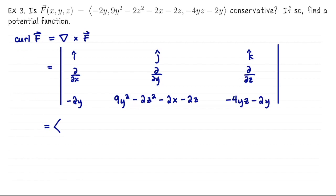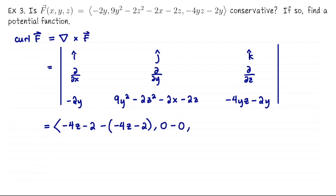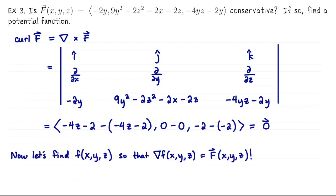Now we do this curl cross product. d/dy of (−4yz − 2y) is going to be −4z − 2, and then we subtract off d/dz of that large second entry, which is also −4z − 2 — so they cancel out, good news. For the second entry, d/dz of −2y is 0, and d/dx of (−4yz − 2y) is also 0, so that second entry is just 0. For the last entry, d/dx of the second term is −2, and d/dy of the first term is also −2, so −2 minus −2 is also 0. The curl of this vector field is zero, which means it makes sense to go looking for a potential function.